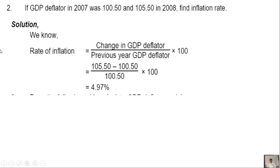The rate of inflation equals change in GDP deflator divided by previous year GDP deflator, into 100. Change in GDP deflator: 105.50 minus 100.50 equals 5. Previous year GDP deflator is 100.50. So: 5 divided by 100.50 into 100 equals approximately 4.97%.